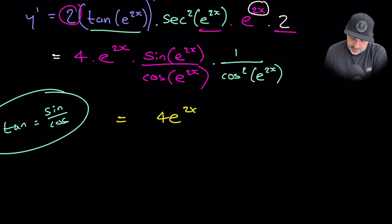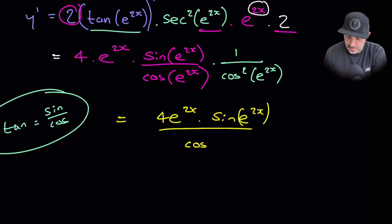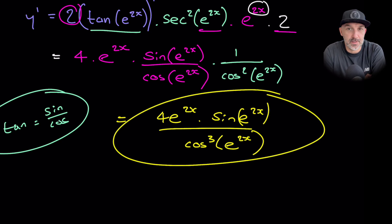We have 4e to the 2x times by sine e to the 2x, all divided by cosine cubed e to the 2x. There we go. And we've left our answer in sine and cos.